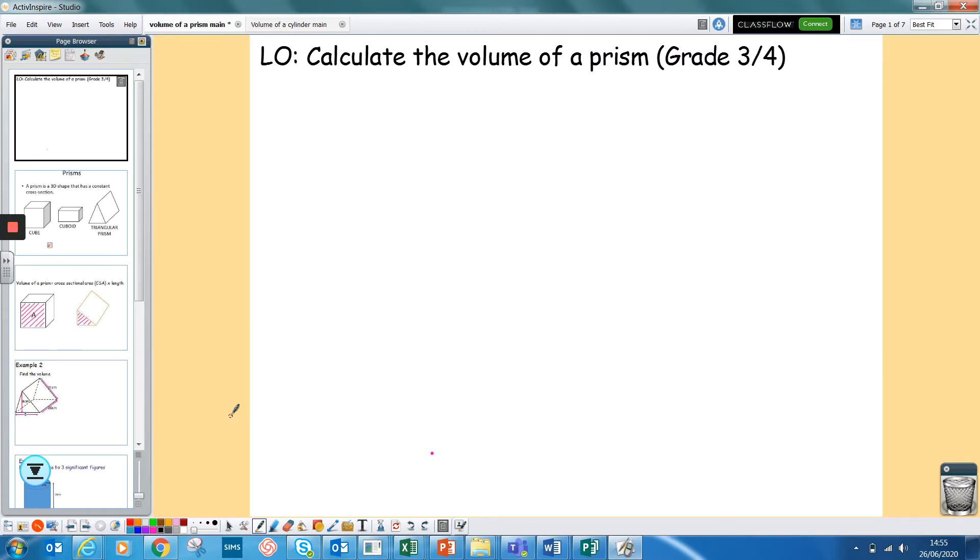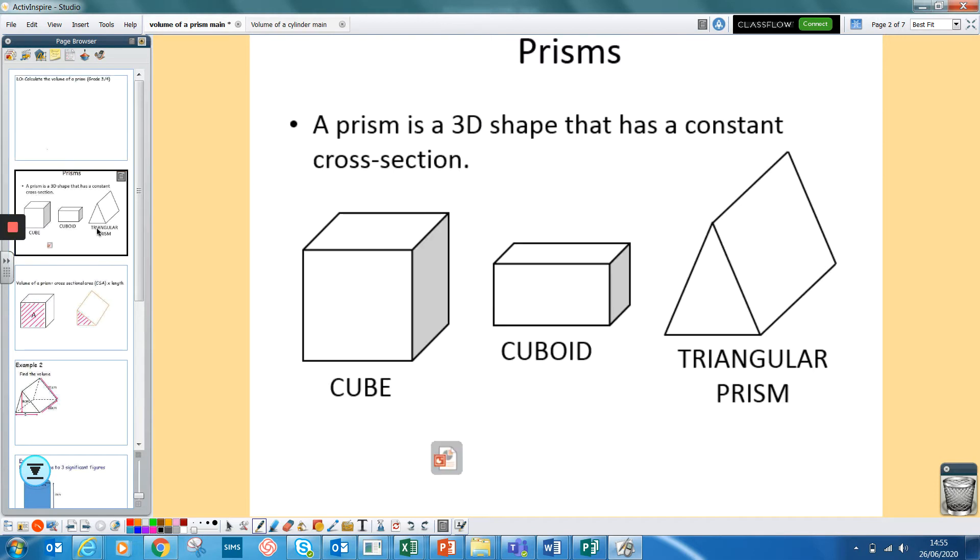So a prism, as hopefully you all should know, is a 3D shape that has a constant cross section. These aren't all the prisms, these are just three examples. And when I'm talking about cross section, I'm talking about like this bit here is a cross section because it's the same all the way along there. And this one here is the cross section all the way along there. And on this one, the triangle would be the cross section because that then would be the same all the way through.